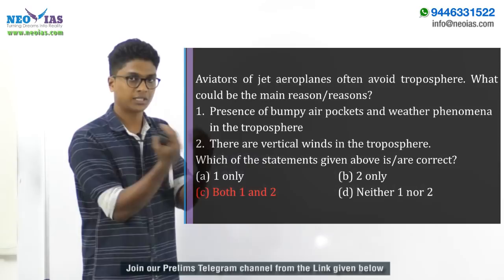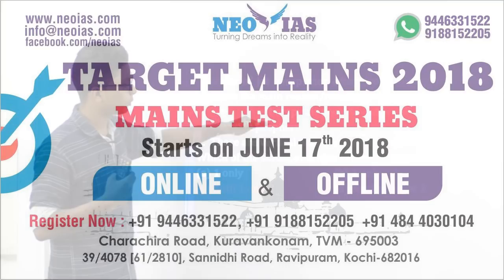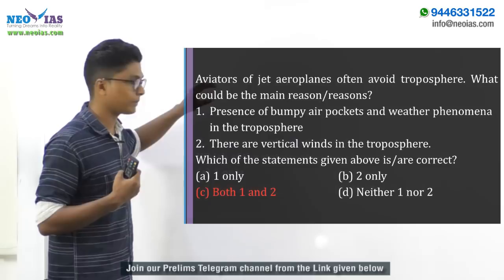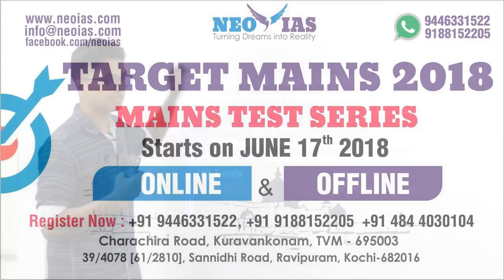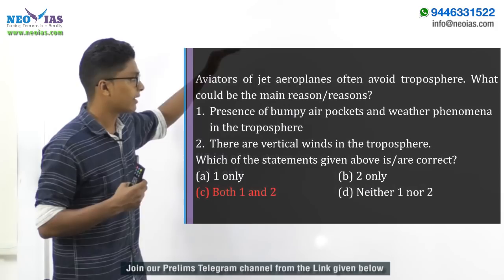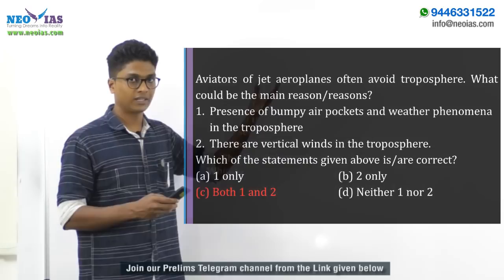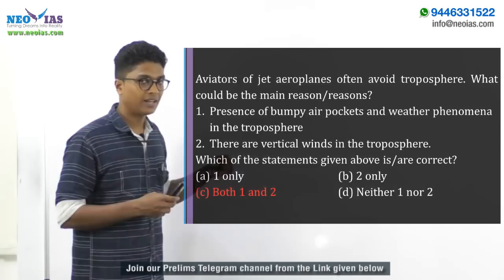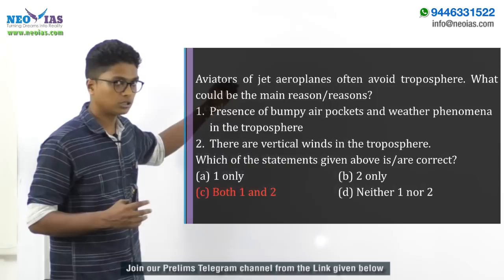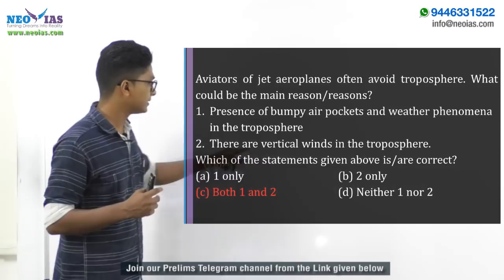This statement is directly lifted from the textbook itself. So the presence of Bambi air pockets and weather phenomena in the troposphere is one reason why we avoid flying through it. The second reason is that there are vertical winds in the troposphere. Since we have upward moving winds mainly due to convective currents and insolation, this is not suitable for aviation — we need horizontally moving wind. In the stratosphere, we don't have any upward moving wind. So the answer comes out as C, which is both 1 and 2.